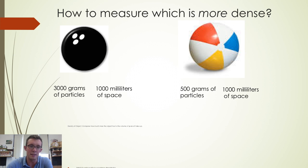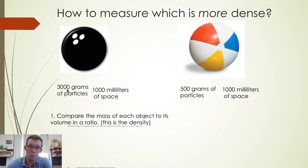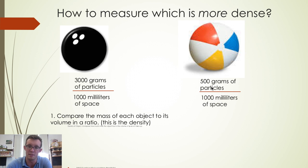If we want to calculate the densities of these objects, the first thing we need to do is compare the mass of each object to its volume in the form of a ratio. So the density of the bowling ball we would express as 3,000 grams of particles taking up 1,000 milliliters of space, whereas the density of the beach ball we would express as 500 grams of particles taking up 1,000 milliliters of space.